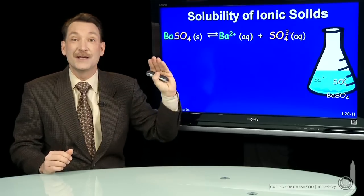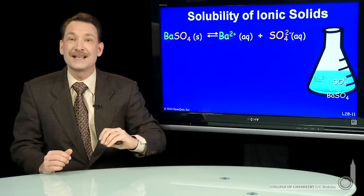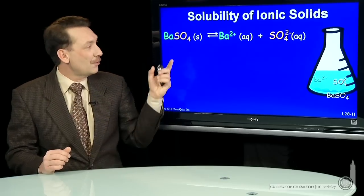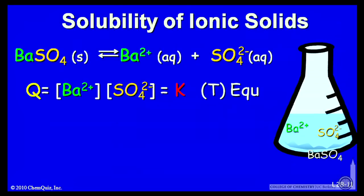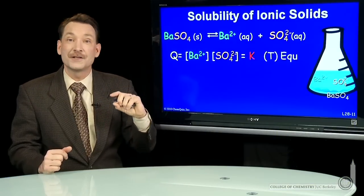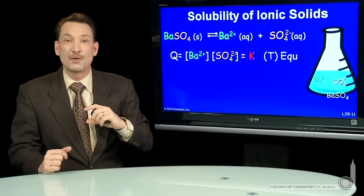In fact, if we write the equilibrium expression for this, we'll find the equilibrium constant is less than 1. It favors the solid. So let's write that down. Here's the reaction quotient: the barium ions, sulfate ions—those are the products. The reactants that would normally go in the denominator don't appear because pure solids and pure liquids don't appear in our equilibrium and reaction quotient expressions.